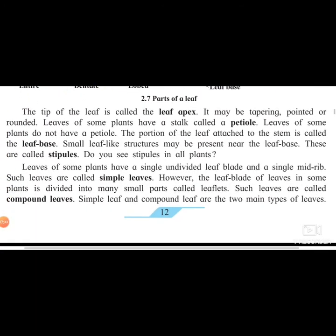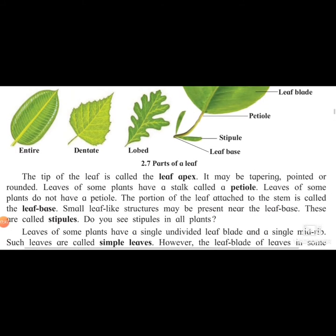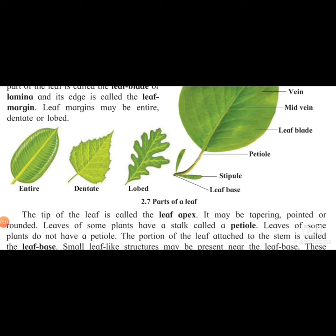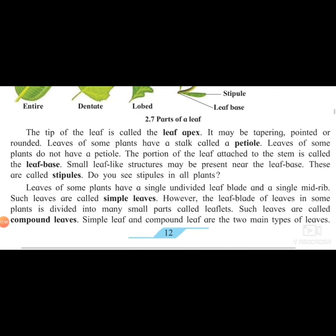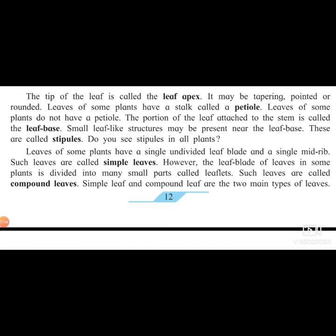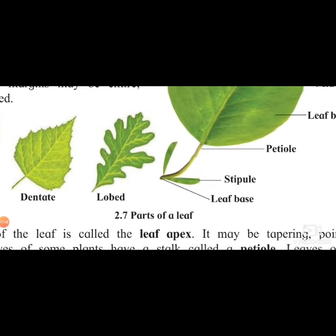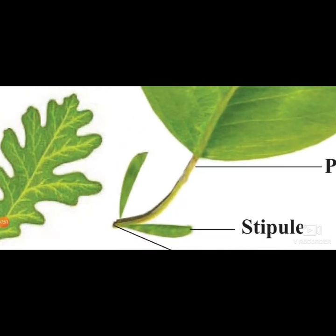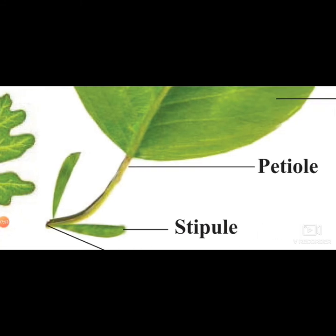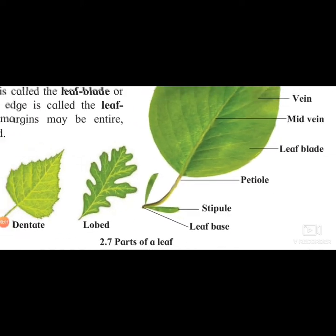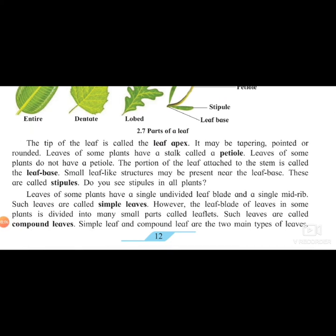The tip of the leaf is called the leaf apex. It may be tapering, pointed, or rounded. Leaves of some plants have a stalk called the petiole, which connects the stem and the leaf. Leaves of some plants do not have a petiole and are directly attached to the stem. The portion of the leaf attached to the stem is called the leaf base.